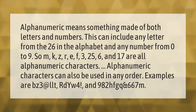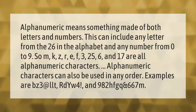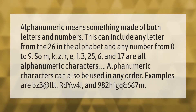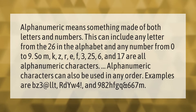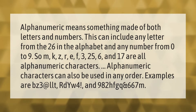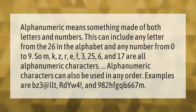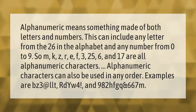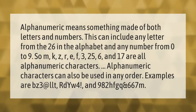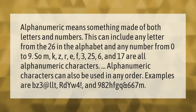Alphanumeric means something made of both letters and numbers. This can include any letter from the 26 in the alphabet and any number from 0 to 9. So m, k, z, r, e, f, 3, 25, 6, and 17 are all alphanumeric characters. Alphanumeric characters can also be used in any order; examples are bz3, at, llt, rdy, w4.